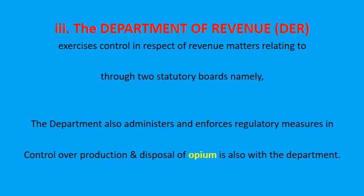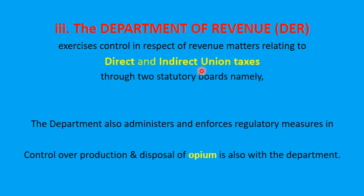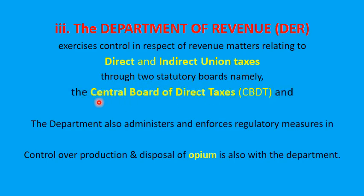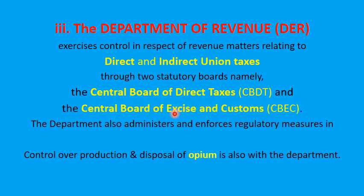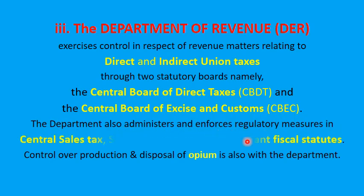The Department of Revenue is the third department under the Ministry of Finance. It exercises control in respect of revenue matters relating to direct and indirect union taxes through two statutory boards, namely the Central Board of Direct Taxes and the Central Board of Excise and Customs. The department also administers and enforces regulatory measures in central sales tax, stamp duties, and other relevant fiscal statutes.